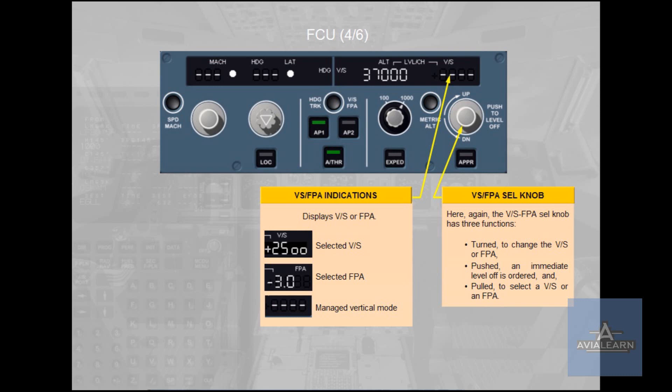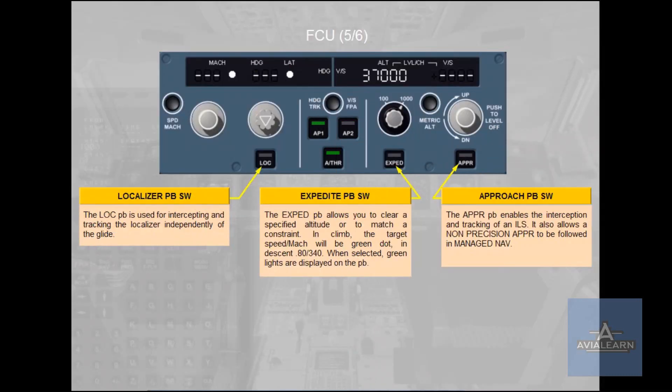The Vertical Speed and Flight Path Angle Selector Knob has three functions. First, turned: to change the vertical speed or flight path angle. Second, pushed: an immediate level off is ordered. Third, pulled: to select a vertical speed or a flight path angle. The Localizer Push Button Switch is used for intercepting and tracking the localizer independently of the glide.